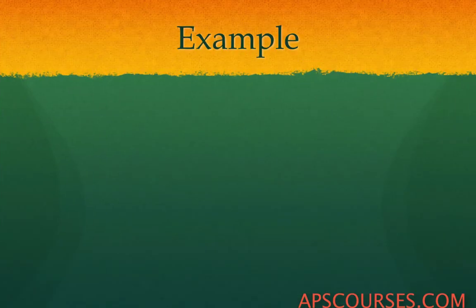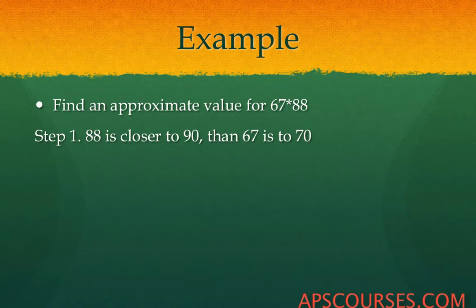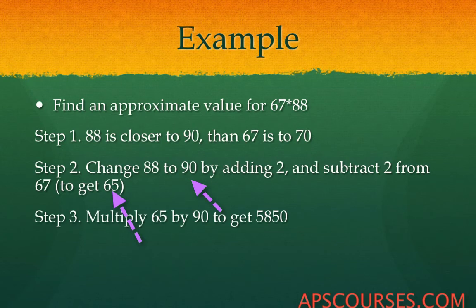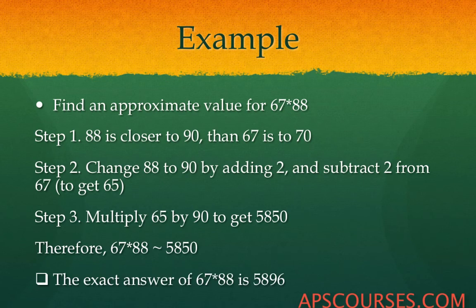Take another example: find an approximate value for 67 multiplied by 88. Since 88 is closer to 90, you add 2 to 88 to get 90, and subtract 2 from 67 to get 65. The two new numbers are 90 and 65. Multiply them to get 5850 as the approximate answer. The exact answer is 5896, so you get a good roundabout answer for this multiplication.